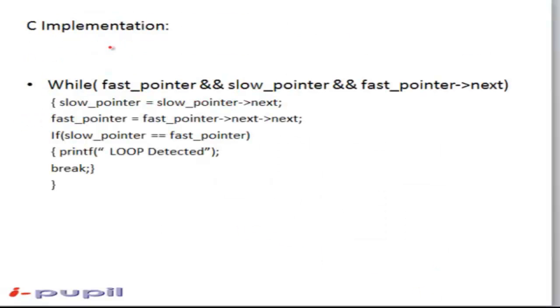Now we study the C implementation of our problem. The fast pointer and slow pointer are pointers as pointed before. The slow pointer iterates by one step whereas the fast pointer iterates by two steps. If the slow pointer is equal to the fast pointer, the loop is detected.